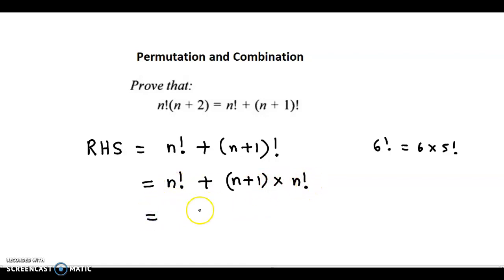Now we can take n factorial as the common factor. In brackets we are left with 1 plus n plus 1. So finally we have n factorial times n plus 2, and that is equal to the left hand side.